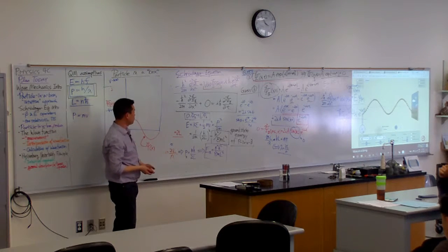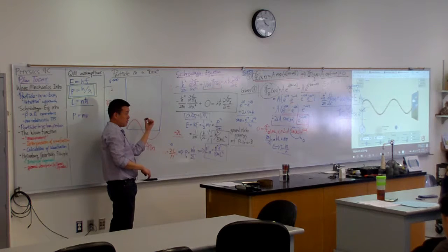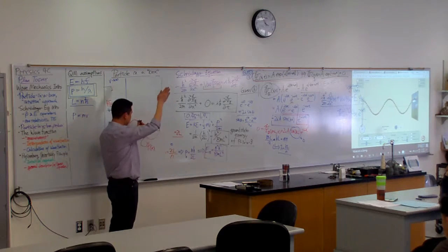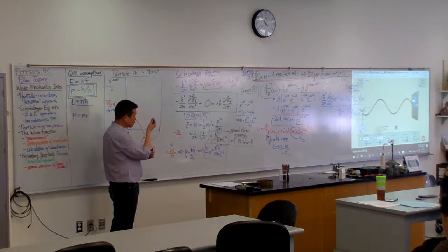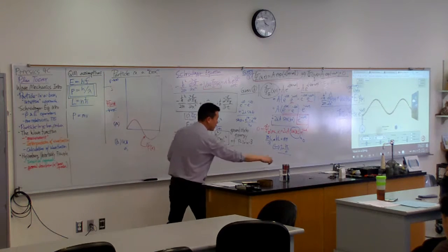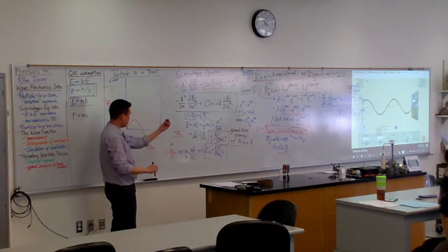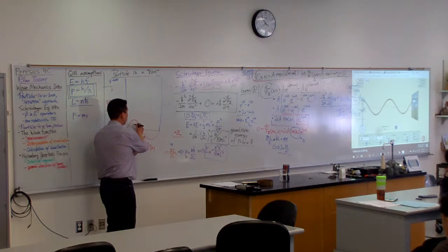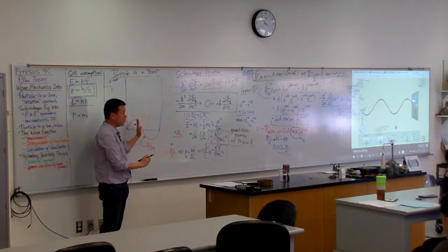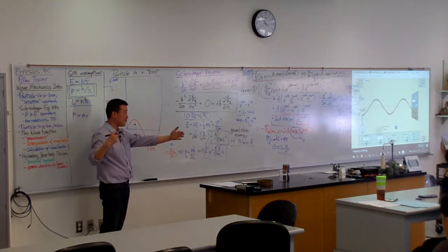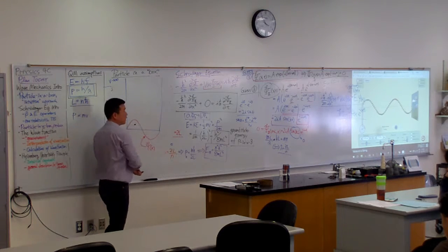So now you try to do this. You try to actually measure the position of the particle. You shine some light on it or you try to measure the position of the particle. Then when you actually detect the particle, what you would see is that you would see the particle at one particular location. The particle itself is not spread out. You don't see a kind of smear of the particle over the entire space. You see it at one location.